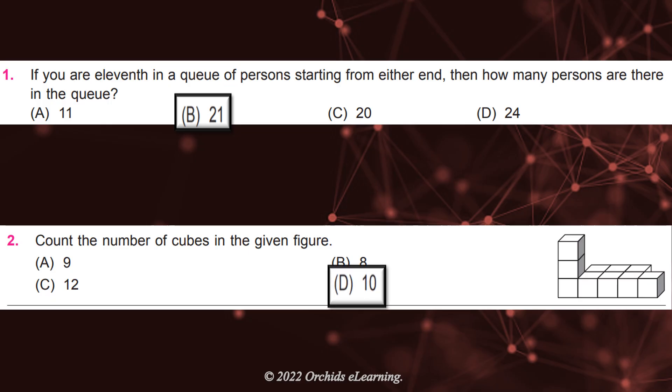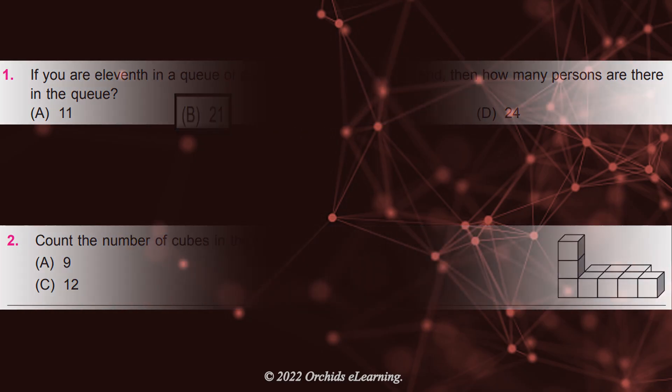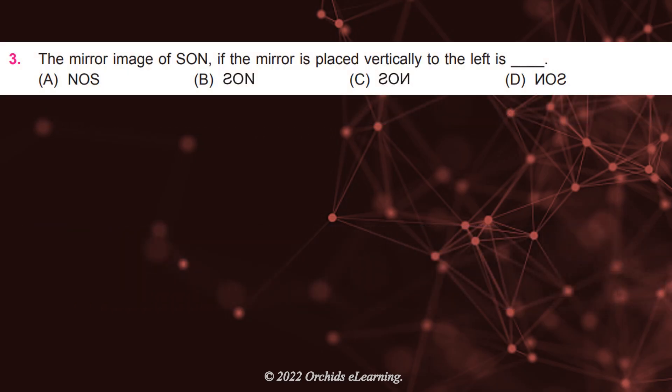Answer: D, 10. The mirror image of Sun, if the mirror is placed vertically to the left, is D.